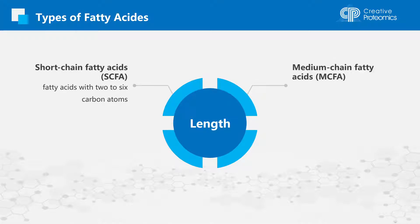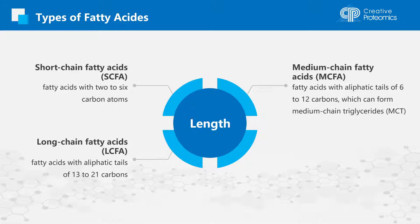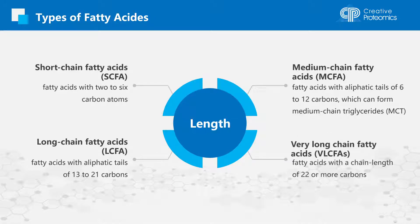Medium-chain fatty acids are fatty acids with aliphatic tails of 6–12 carbons, which can form medium-chain triglycerides. Long-chain fatty acids are fatty acids with aliphatic tails of 13–21 carbons. Very long-chain fatty acids are fatty acids with a chain length of 22 or more carbons. Mammals have a variety of very long-chain fatty acids differing in chain length and the number of double bonds.